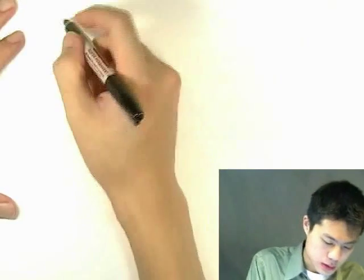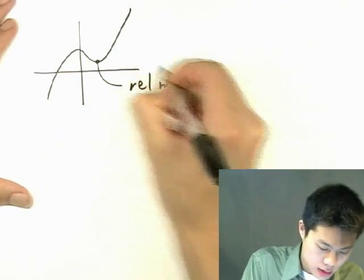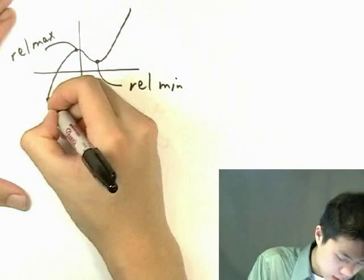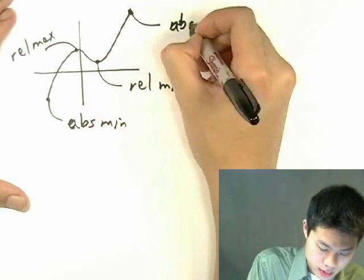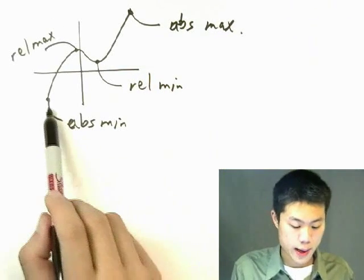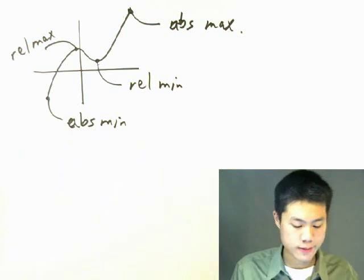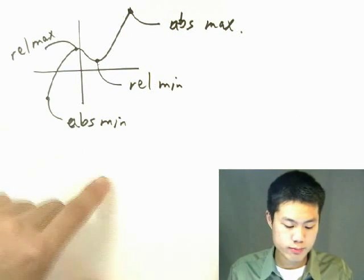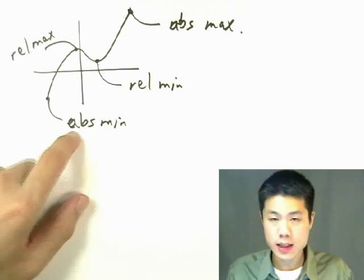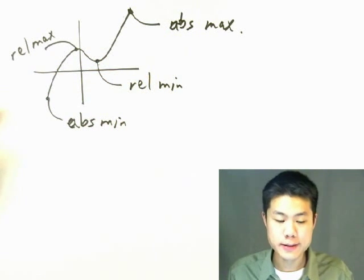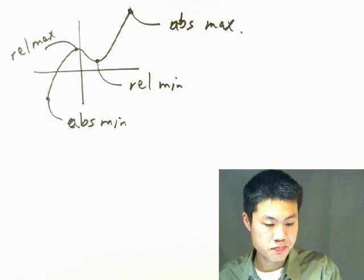On this final example graph: this point is a relative minimum, this is a relative maximum, this is the absolute minimum, and this point is the absolute maximum. Could you technically say the absolute minimum is also a relative minimum? Yes — by definition, all absolute extrema are also relative extrema, but for practical purposes we just label it absolute, because we want to identify the absolute maximums and minimums.